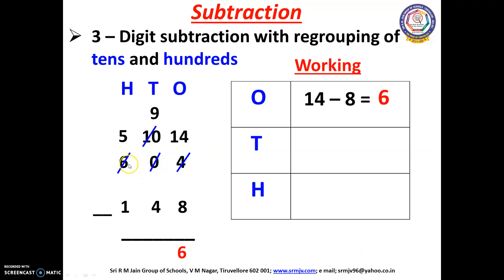Now we are going to do the 10's place. Here we have 9 and 4. We can subtract 9 minus 4. Open your fingers, children: 4 after — 5, 6, 7, 8, 9. How many fingers have you opened? Yes, we have opened 5 fingers. So we have to write 5 here.